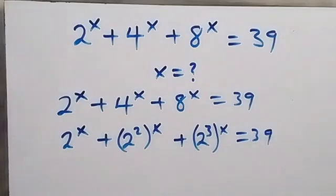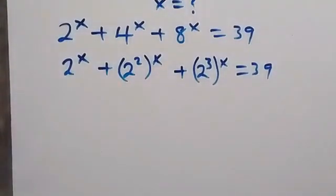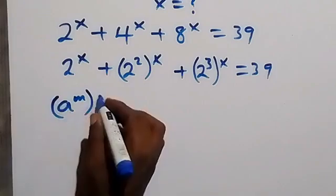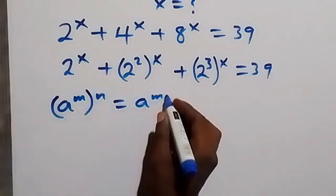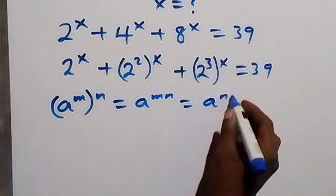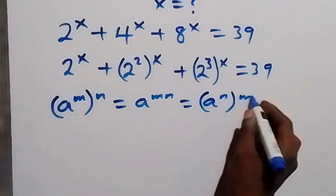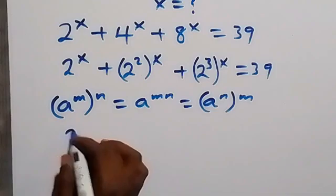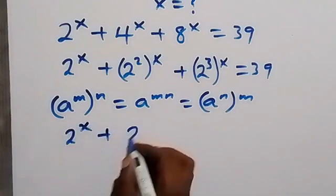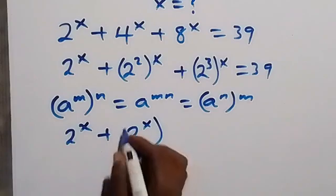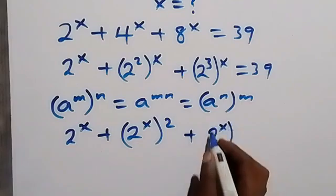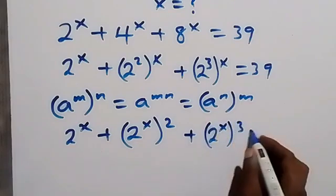We can interchange the powers because when we have a raised to power m raised to power n, this equals a raised to power n raised to power m. So this line becomes 2 raised to power x, plus 2 raised to power x all squared, plus 2 raised to power x all cubed, equals 39.